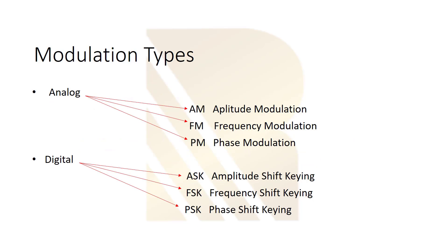We have two kinds of modulation: analog and digital, and each is divided into different types. Analog modulation includes amplitude modulation, frequency modulation, and phase modulation. For digital modulation we have amplitude shift keying, which is similar to amplitude modulation, frequency shift keying, and phase shift keying.